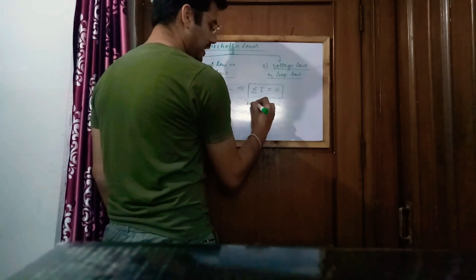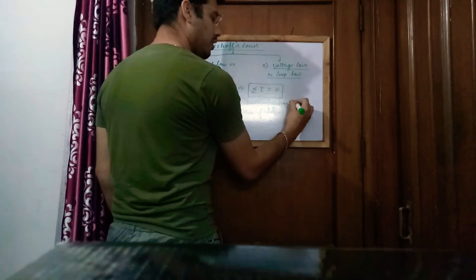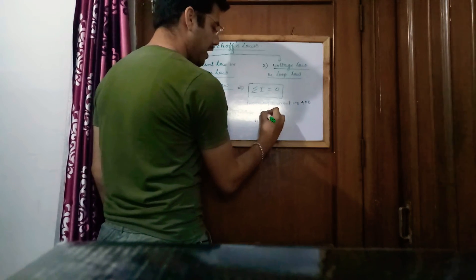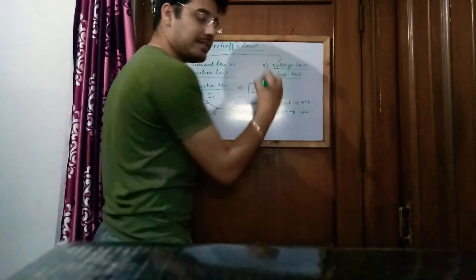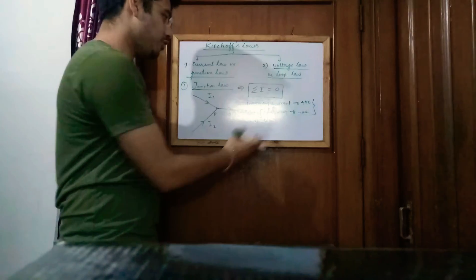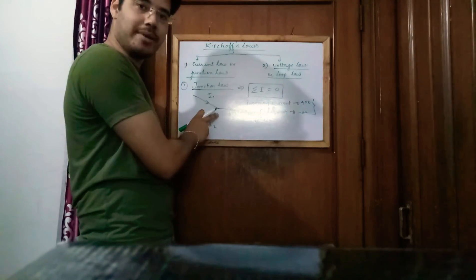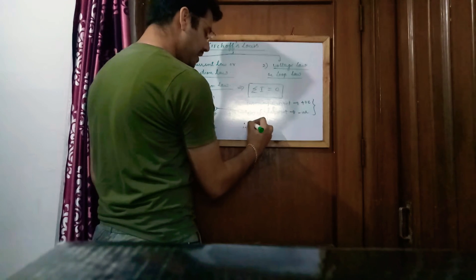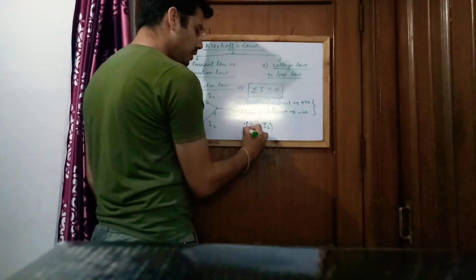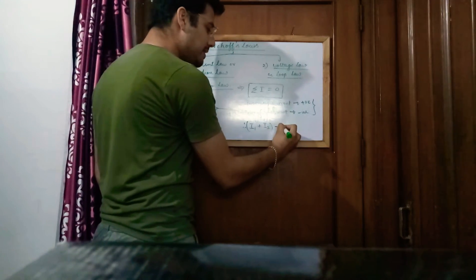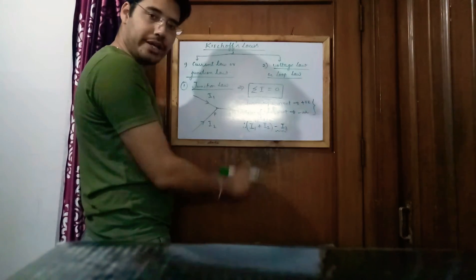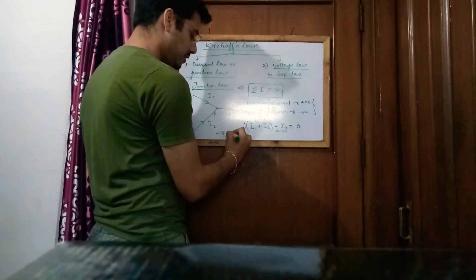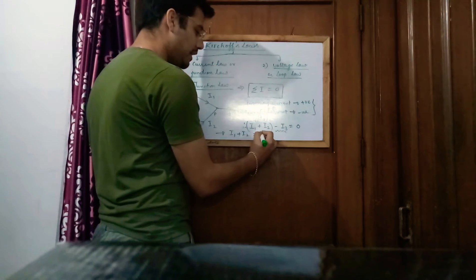The sign conventions are: incoming current is taken as positive, whereas outgoing current is taken as negative. Applying these conventions: I1 is incoming, I2 is incoming, and I3 is leaving junction P. So the junction law gives us I1 plus I2 minus I3 equals zero, which can also be written as I1 plus I2 equals I3.